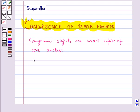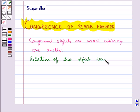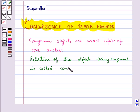The relation of two objects being congruent is called congruence.